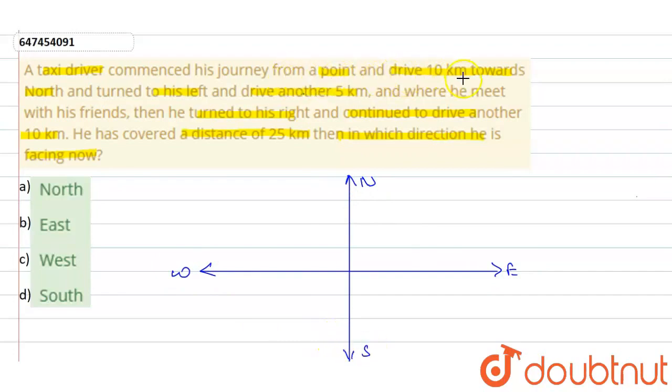वो एक point से 10 km North की जाता है पहले. तो यहां से मान लीजिए चलता है और 10 km North किया. ठीक है? Then he turned to his left and drove another 5 km. यहां से वो left मुड़ता है और 5 km चलता है.